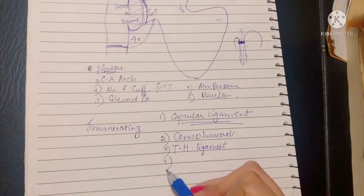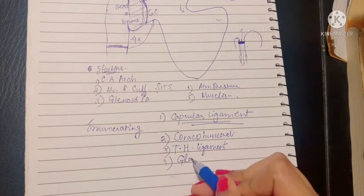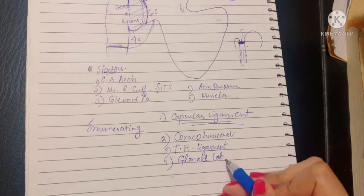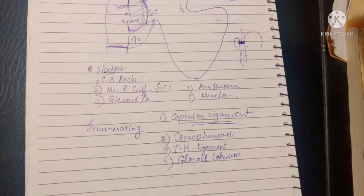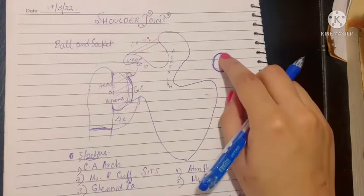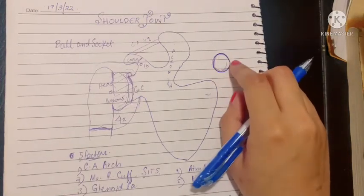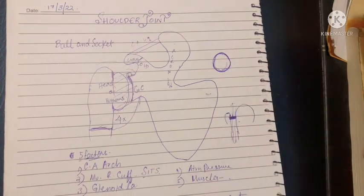And finally, the glenoidal labrum that we talked about earlier. This is basically a fibrocartilaginous rim. This covers the margins or the circumference of the entire glenoid cavity and increases the depth of the cavity, as I mentioned earlier.